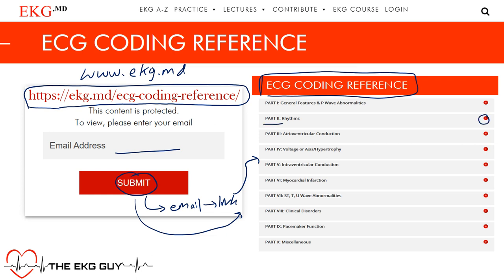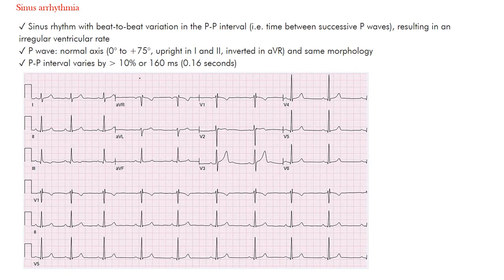Today we're going to look at sinus arrhythmia. So sinus arrhythmia is what we call sinus rhythm with a beat-to-beat variation in the P-to-P interval. That's the time between successive P waves — back-to-back P waves — and that results in an irregular ventricular rate.